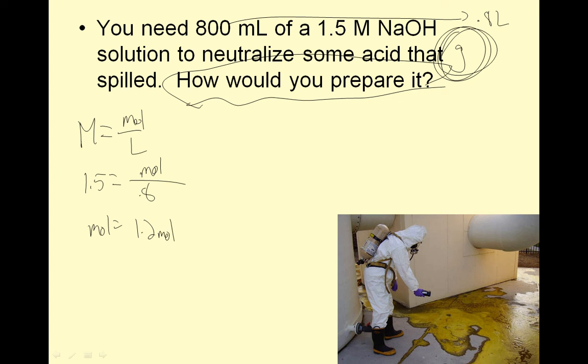I have 1.2 moles of NaOH. I have to tell you how to prepare it. I'm going to have to go into grams because I don't have a balance that reads moles. 1.2 moles NaOH times dividing bar, one mole, in grams of NaOH. 22.99 plus 16 plus 1.01 is 40.00 grams. So 1.2 times 40 is 48. Now you have to say how to make it.